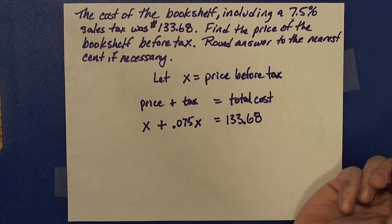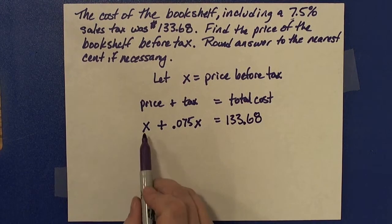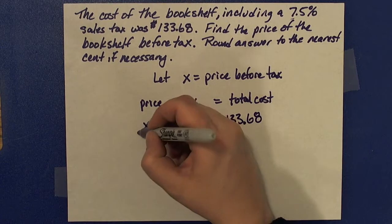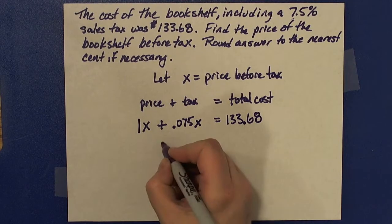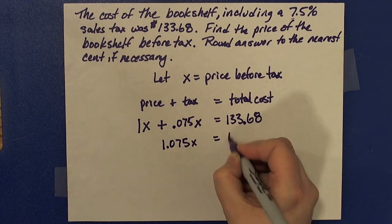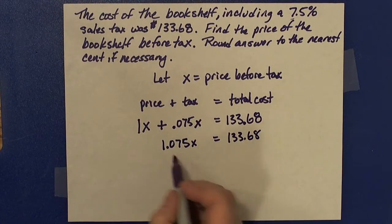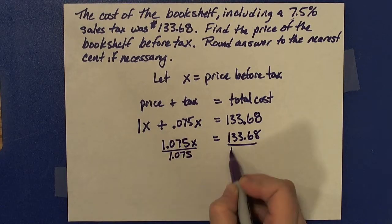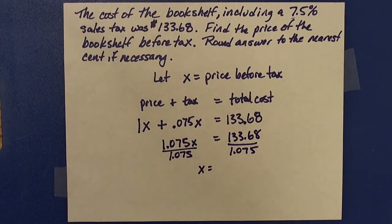At this point I have an equation in one variable that I can solve. I have x plus 0.075x — I can put a 1 here to remind myself that's 1x. 1 plus 0.075 is 1.075, so 1.075x equals $133.68. Then I'm going to divide both sides by 1.075 to isolate x.